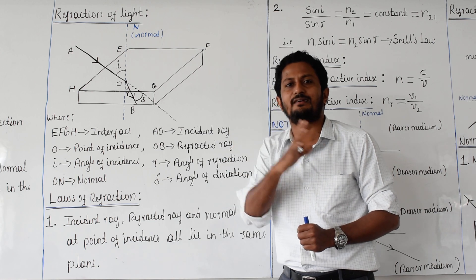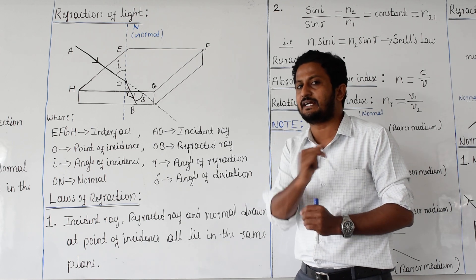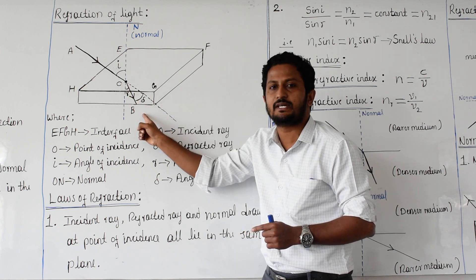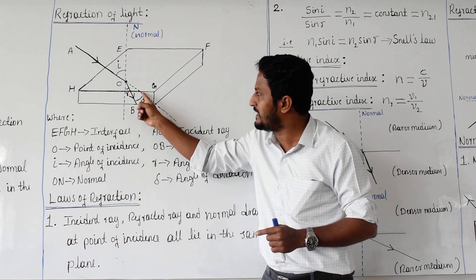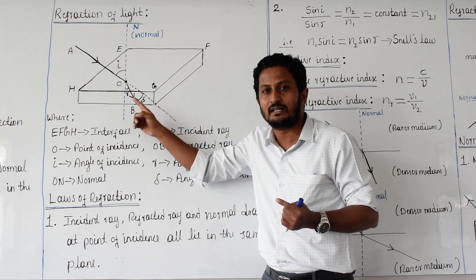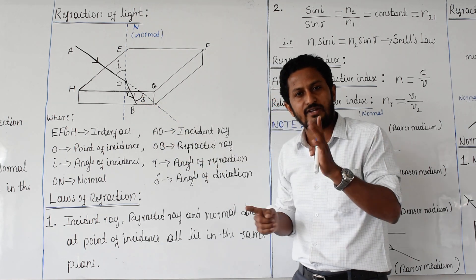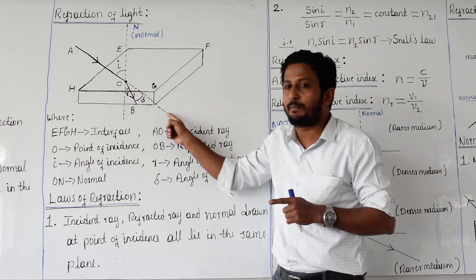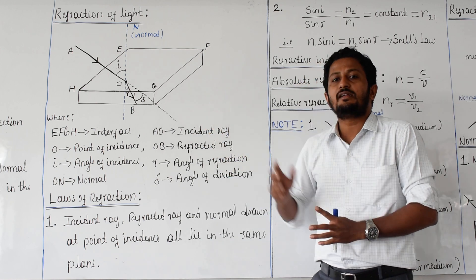There is one more angle, represented by the symbol delta, called the angle of deviation. Deviation means bending. Instead of going straight, ray AO went along OB — it deviated by this angle. The angle of deviation is the angle between the refracted light ray and the extended part of the incident light ray.